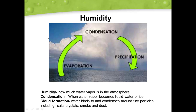Humidity is how much water vapor is in the atmosphere. Condensation is when water vapor becomes liquid water or ice. Cloud formation is when water binds to and condenses around tiny particles, including salt crystals, smoke, and dust. Evaporation, condensation, and precipitation are the key factors in our water cycle that can affect humidity.